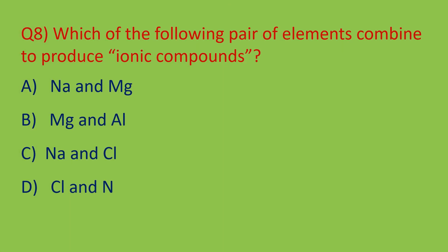Question number eight: which pair of elements combines to produce ionic compounds? Ionic compounds are formed between metals and non-metals by transfer of electrons. Sodium is a metal and chlorine is a non-metal; sodium gives an electron to chlorine to produce sodium chloride, which is an ionic compound. So out of the four options, option C — sodium and chlorine — is the right answer.